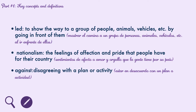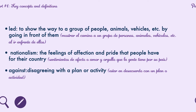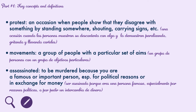Number three: 'against' means disagreeing with a plan or activity. Number four: 'protest' means an occasion when people show that they disagree with something by standing somewhere, shouting, or carrying signs. Number five: 'movements' means a group of people with a particular set of aims. Number six: 'assassinated' means to be murdered because you are a famous or important person, especially for political reasons or in exchange for money.